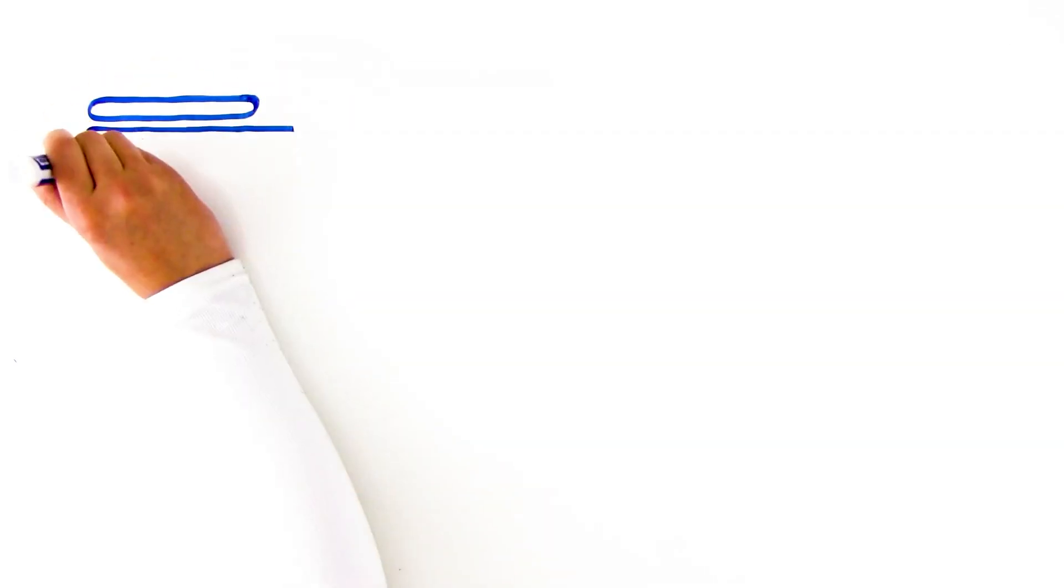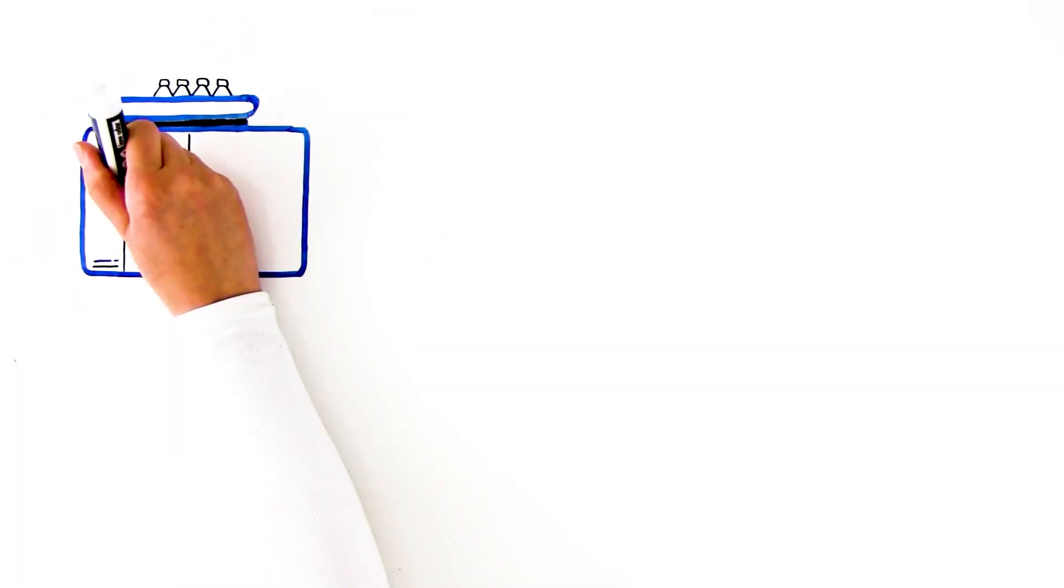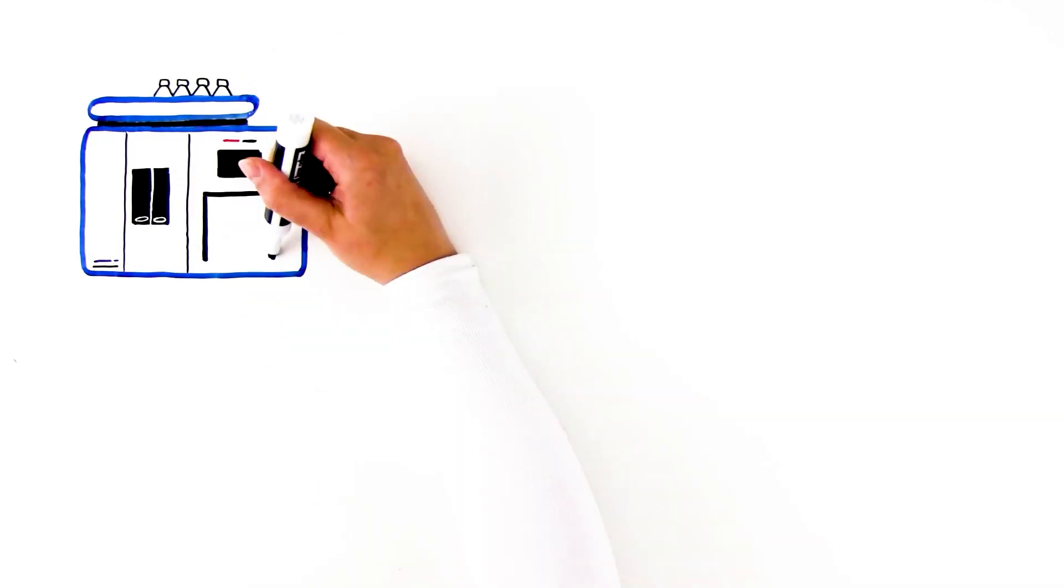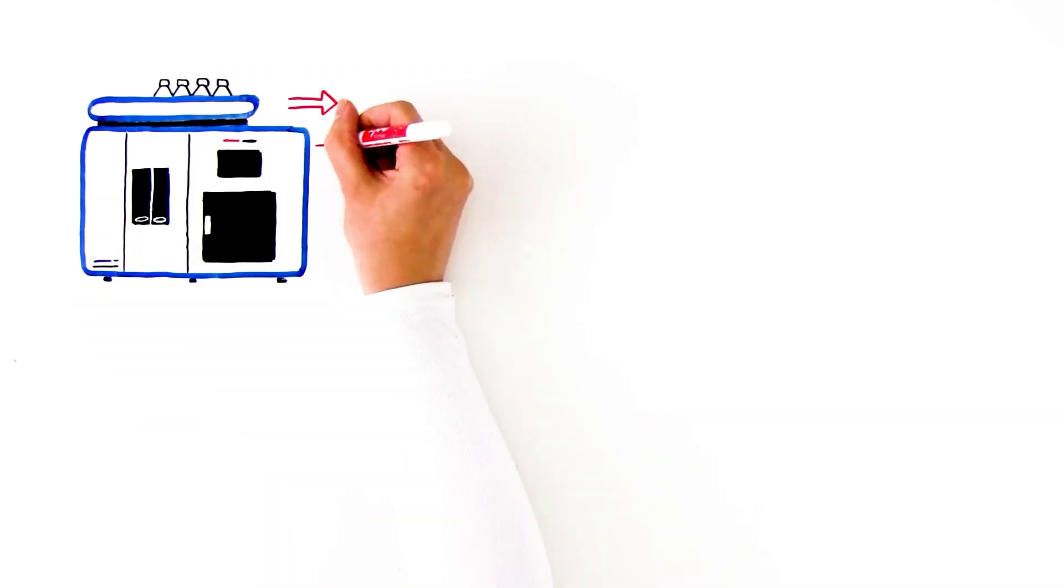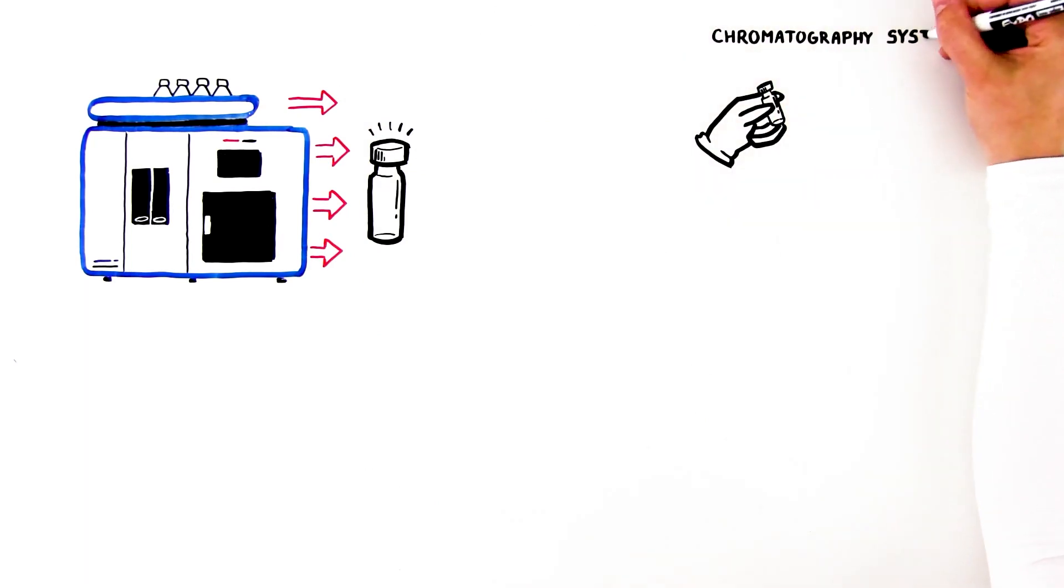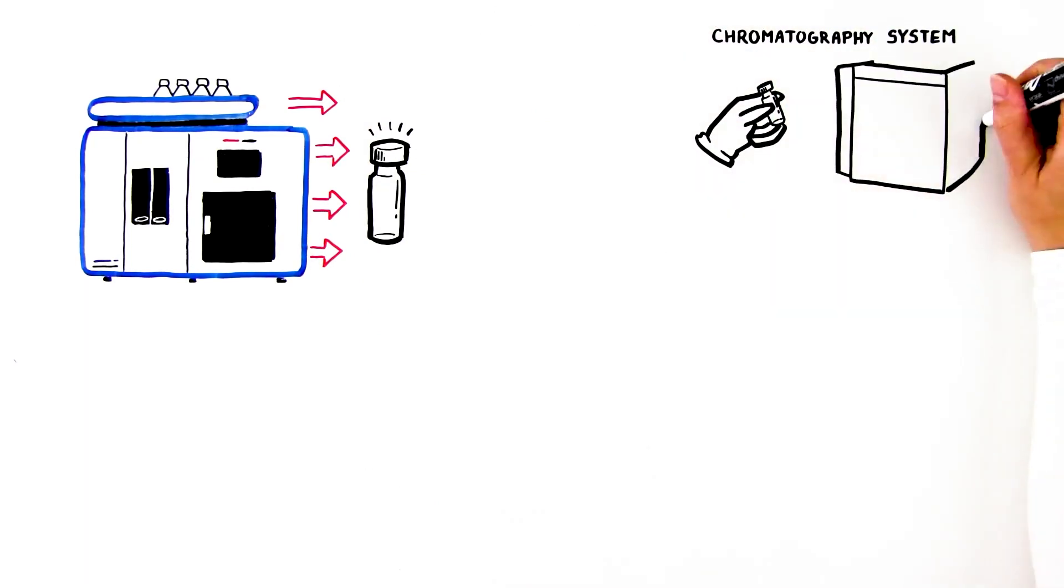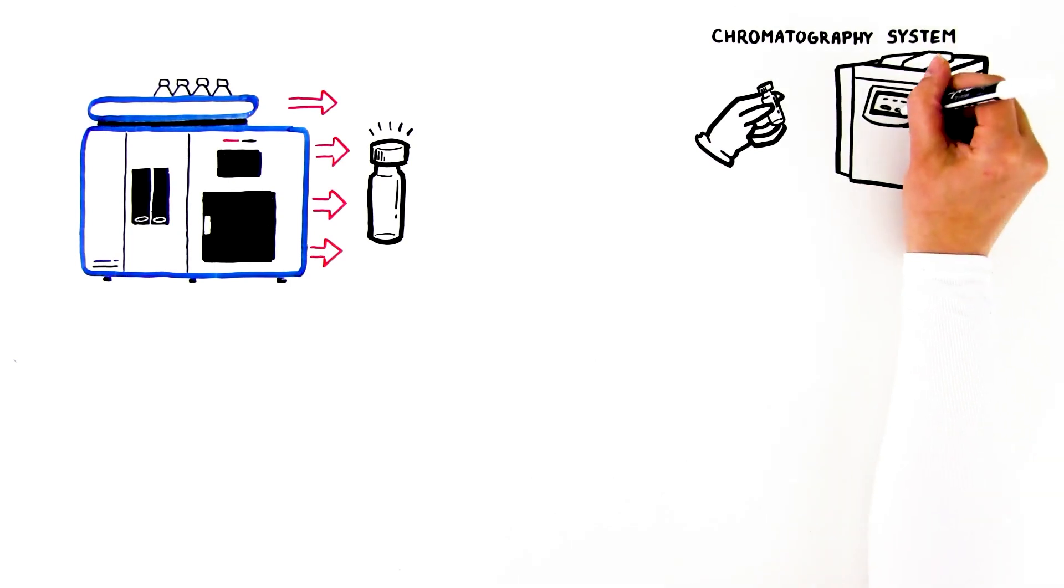To help further boost your productivity, Extreva ASE can do four parallel extractions in one instrument, substantially increasing your throughput. When complete, simply cap the vials and place them on the auto-sampler of your chromatography or mass spec system.